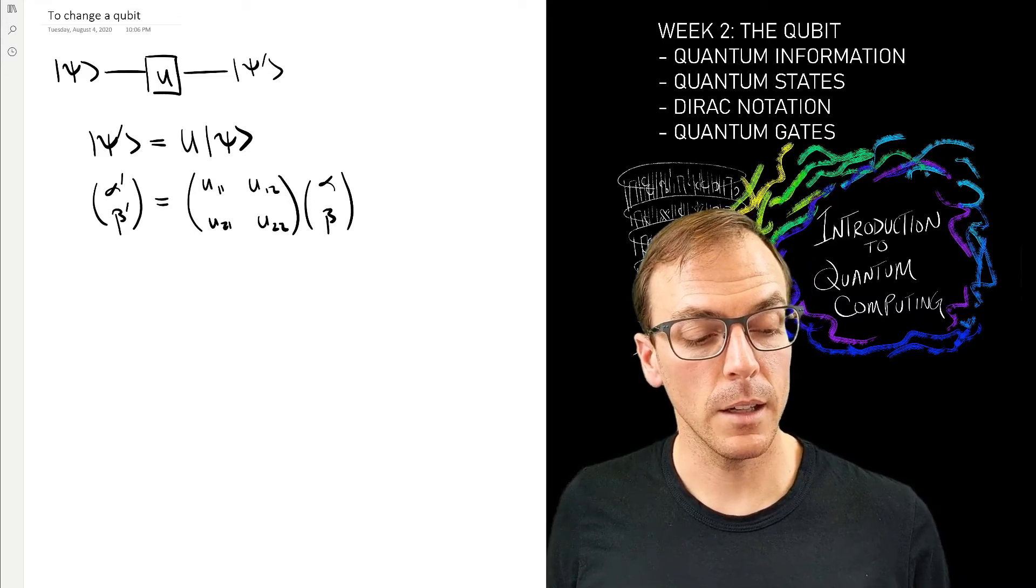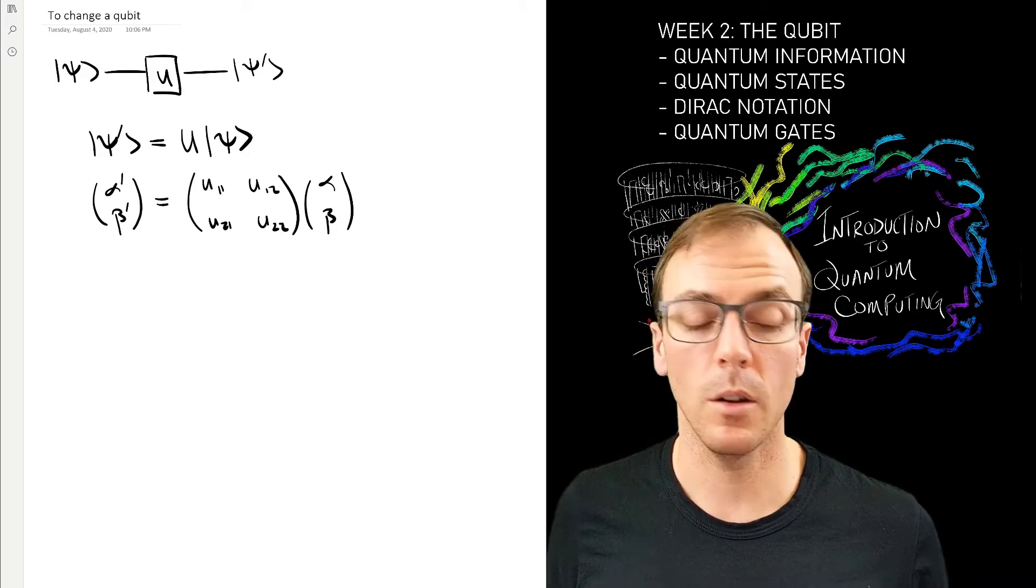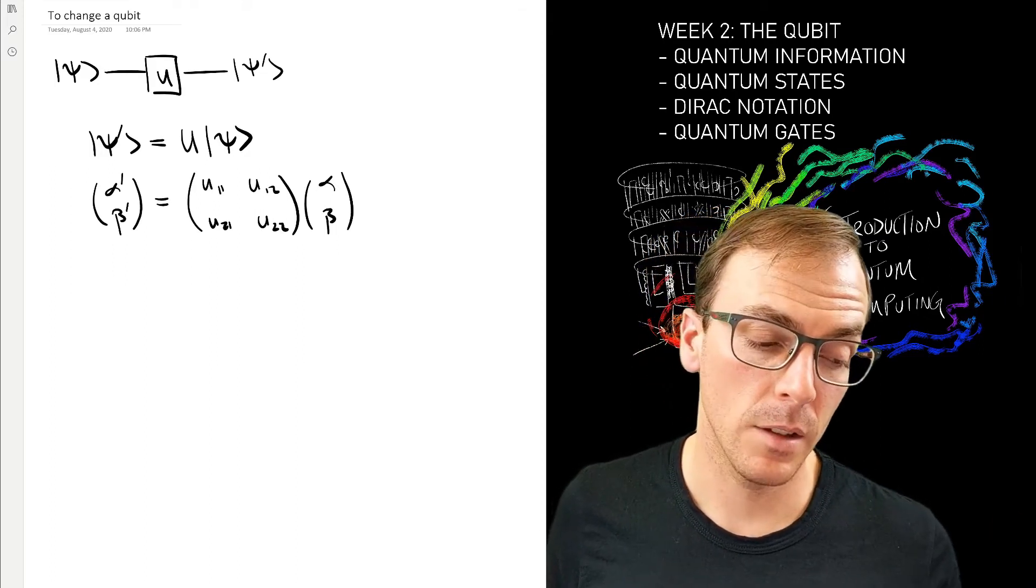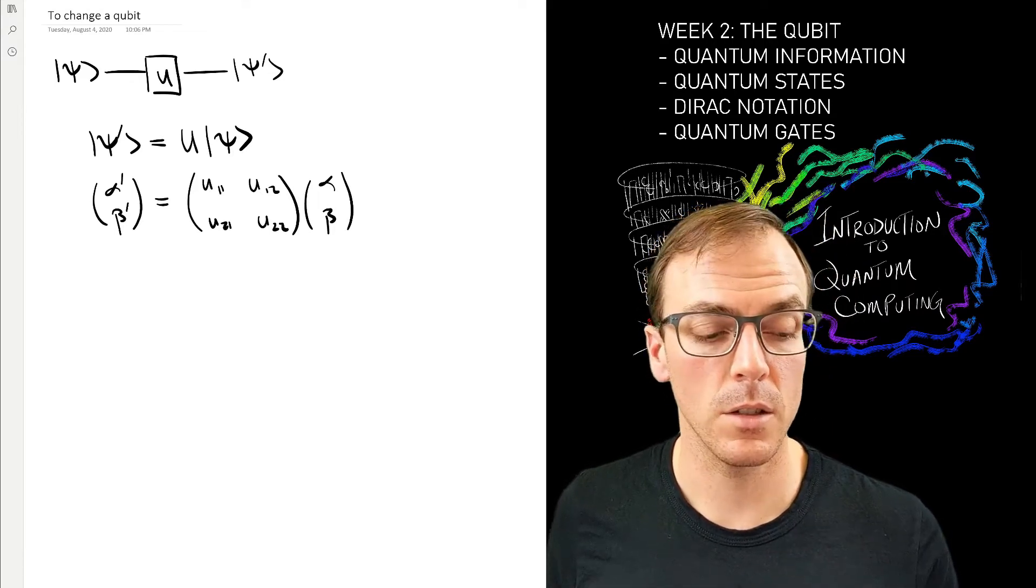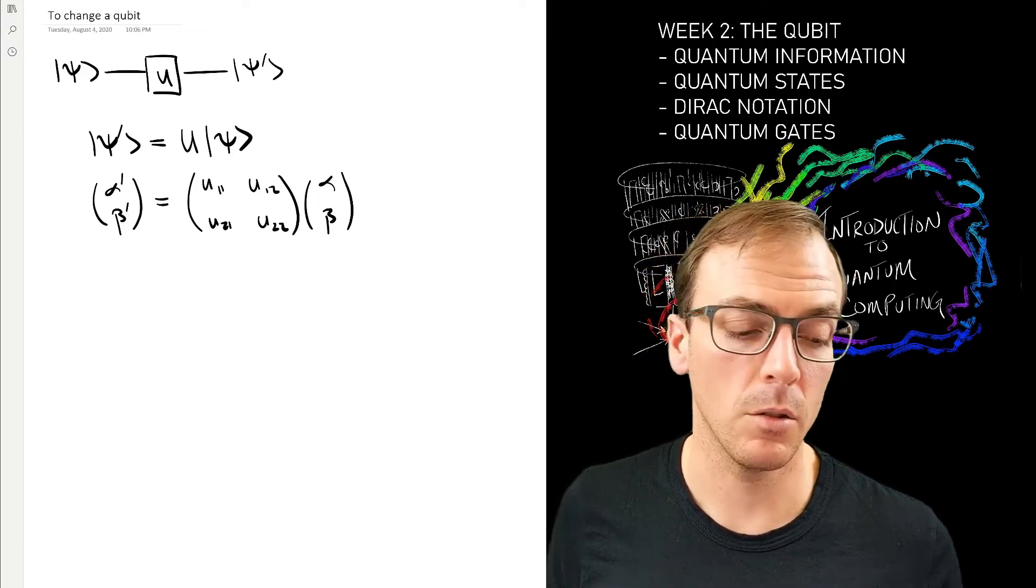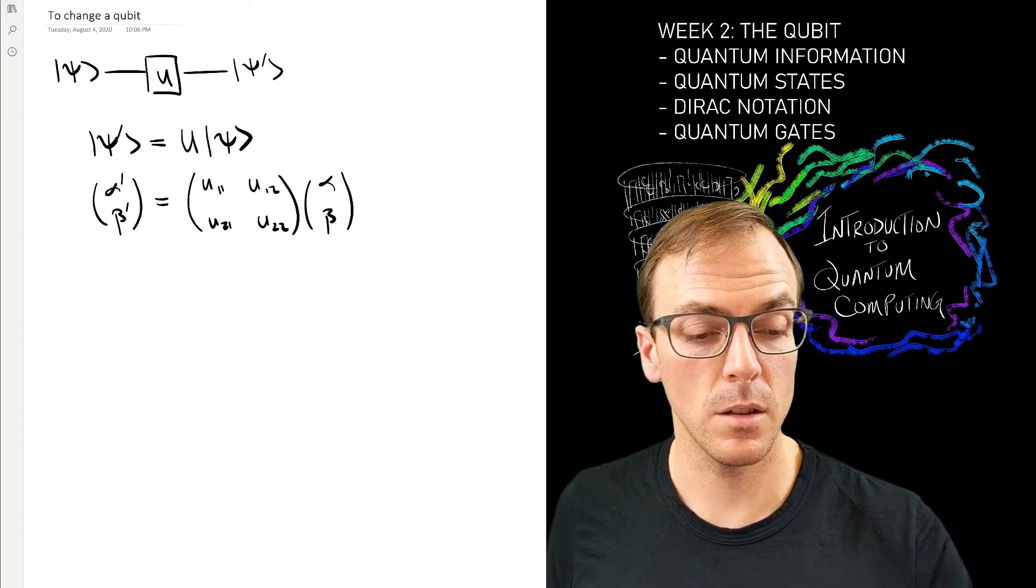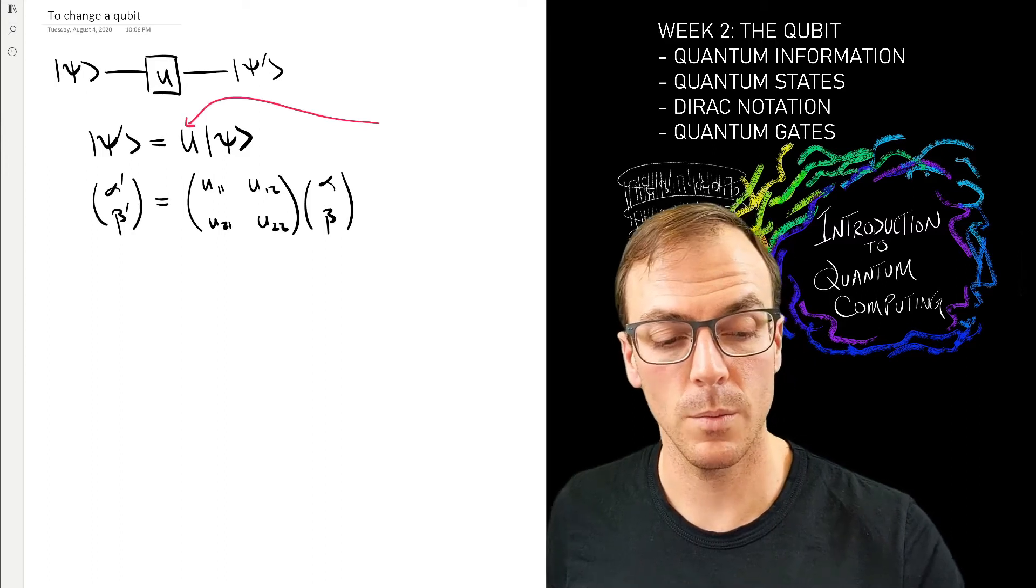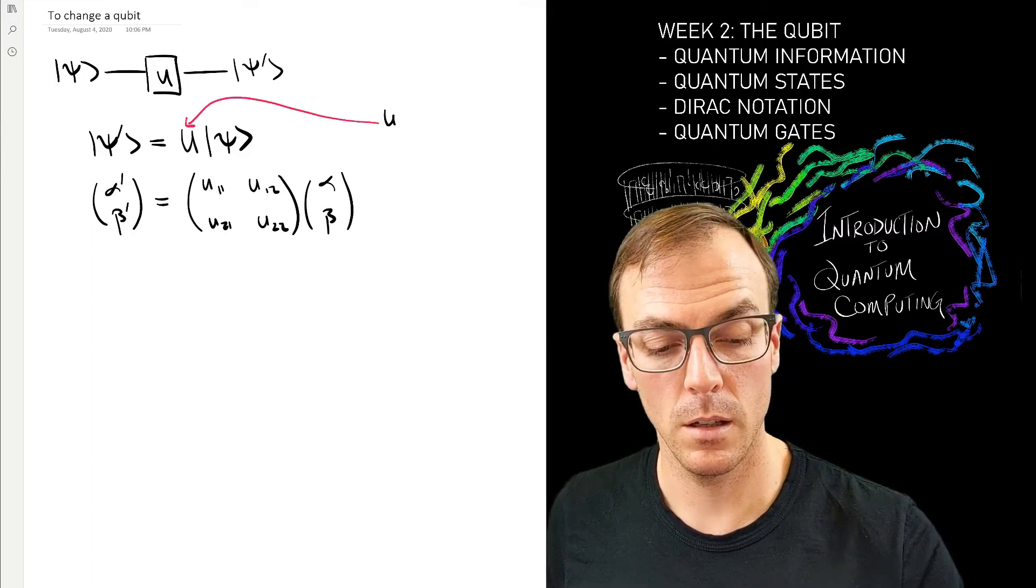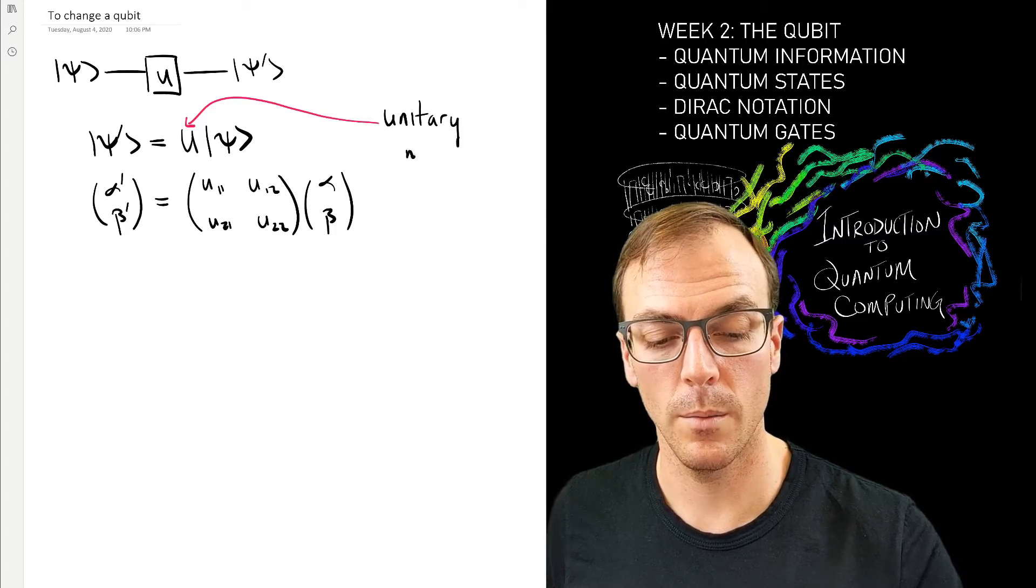Recall that in order to satisfy the constraints of this model, which were I have these two-dimensional complex vectors that are unit vectors and must remain unit vectors, this thing here must be a unitary matrix.